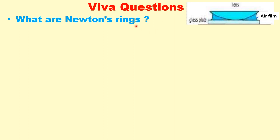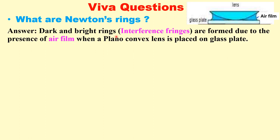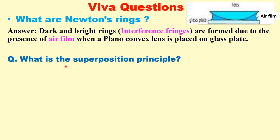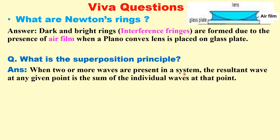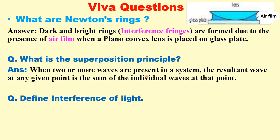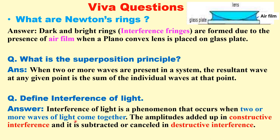Now we will discuss the basic viva questions on this experiment. First question: what are Newton's rings? Newton's rings are dark and bright rings — they are interference fringes formed due to the presence of the air film when a plano-convex lens is placed on a glass plate. What is the superposition principle? When two or more waves are present in a system, the resultant wave at any given point is the sum of the individual waves at that point. Define interference of light: interference of light is a phenomenon that occurs when two or more waves of light come together, and the amplitudes add up in constructive interference and cancel out in destructive interference.